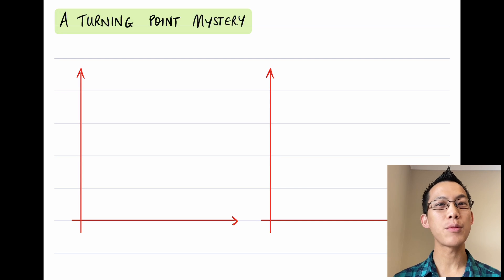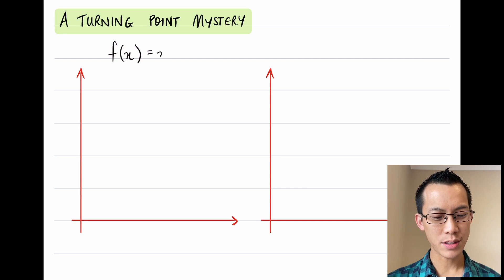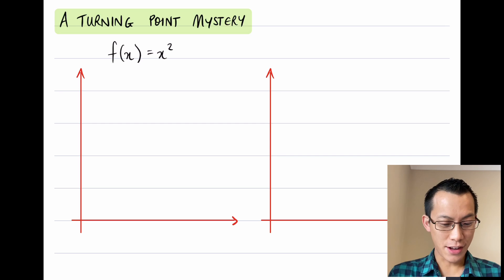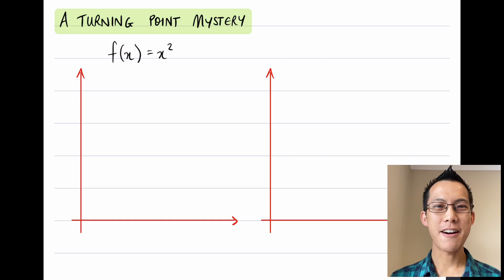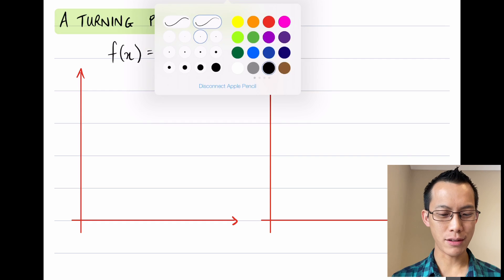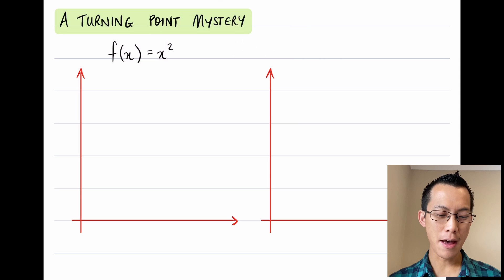To introduce this problem, I'm going to start with something very familiar: the function f(x) = x². Hopefully you're familiar enough with x² that you can see by my Cartesian plane a picture is already forming in your mind. For reasons that will become clear shortly, I'm actually only going to graph the part where x is greater than zero.